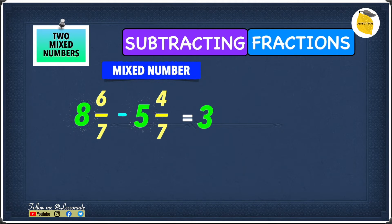Now we've done the whole number, we move on to the fractions. 6/7 minus 4/7 will give you an answer of 2/7. So this means our answer to this question is 3 2/7.